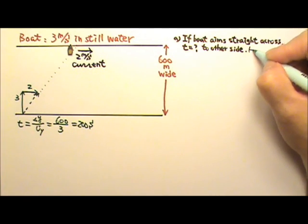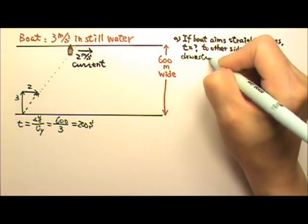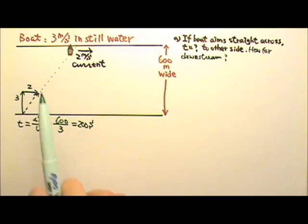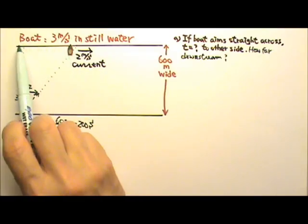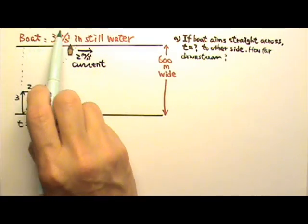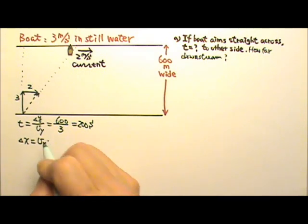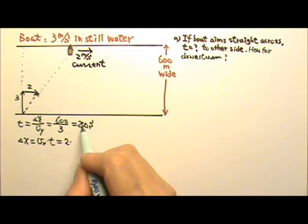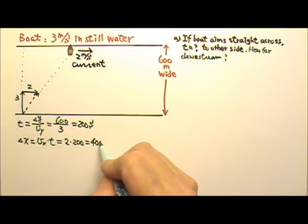Now we can also find how far downstream the boat ends up. That distance is delta x. Since it's also constant velocity motion in the x direction, delta x equals the velocity's x component times time. The x component is 2 meters per second and the time is 200 seconds, so the boat ends up 400 meters downstream.